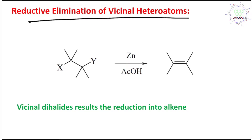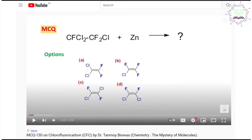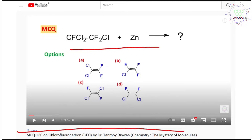The first example is the reductive elimination of a vicinal dihalide. 'Vicinal' means 1,2-substituted — remember it as two neighboring countries needing a visa. Zinc releases two electrons; the first electron reduces one C–X bond to generate a carbanion-type intermediate, the second electron then attacks and the leaving group departs, ultimately producing an alkene. This is reductive dehalogenation to prepare alkenes.